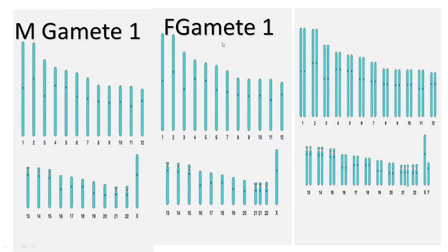Male Gamete 1 and female Gamete 1: on the 21st pair, there is one chromosome from male and two chromosomes from female — so totally on the 21st pair there will be three chromosomes. The total number of chromosomes becomes 47. This happens because these pairs do not segregate — sometimes they do not segregate — and this is what happens when they fuse.